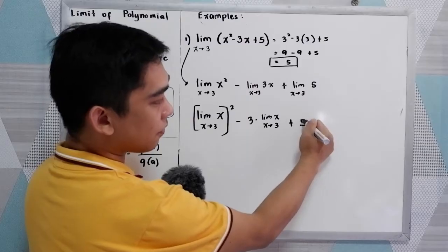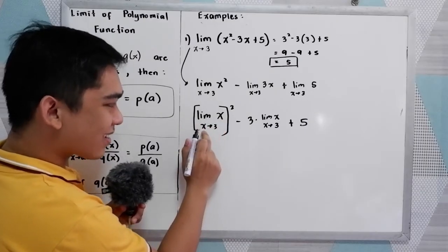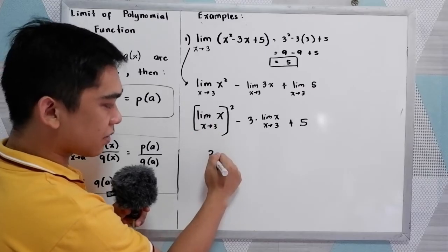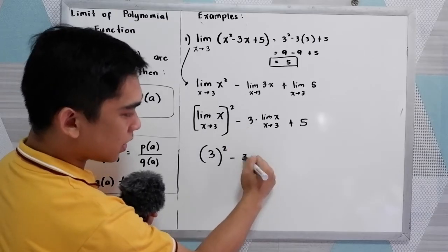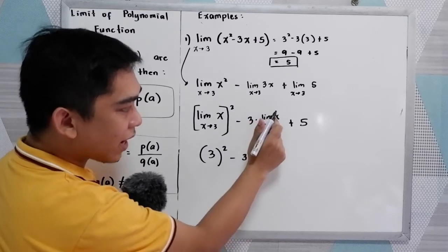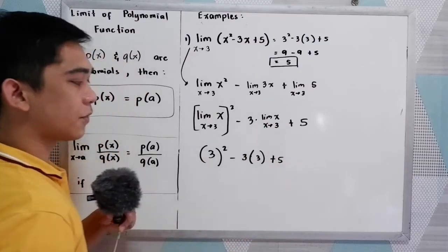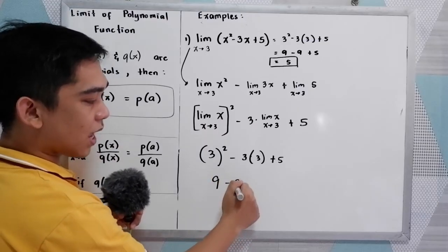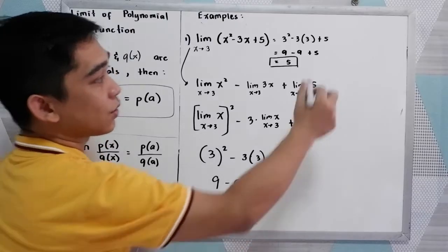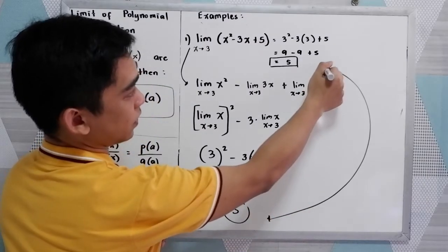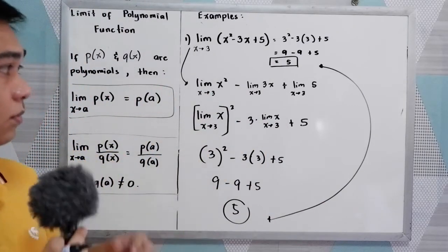For the constant term, by theorem 1 the value is just the constant 5. Evaluating the limit of X as X approaches 3 by theorem 2 gives 3. So we have 3 squared minus 3 times 3, plus 5. That is 9 minus 9 plus 5, which equals 5. So they are the same — that is the application of the limit of polynomial functions and the previous theorems.